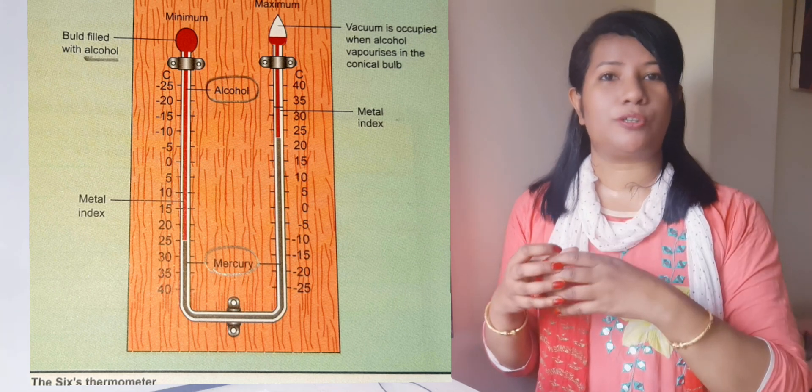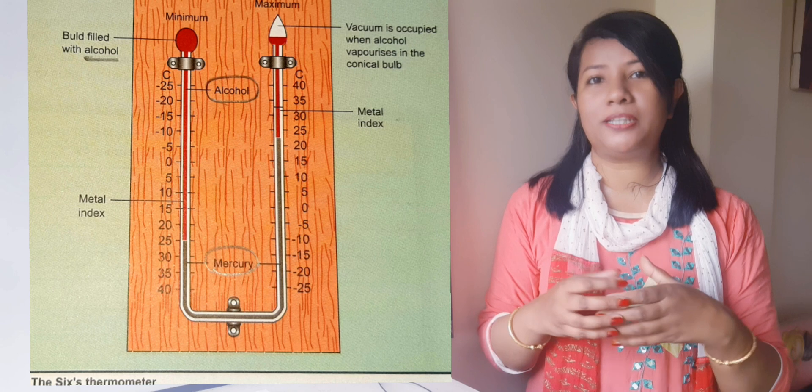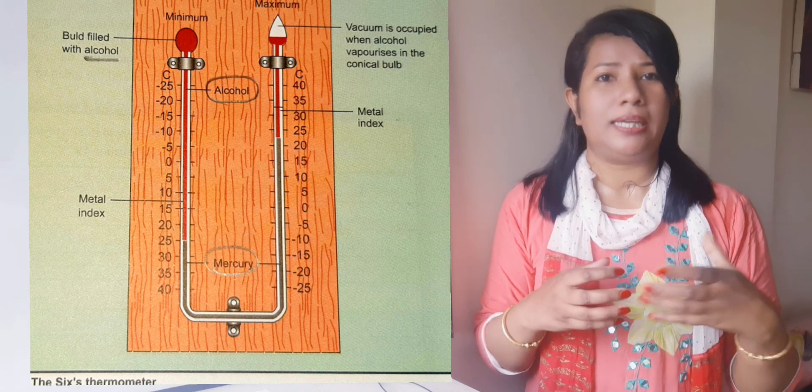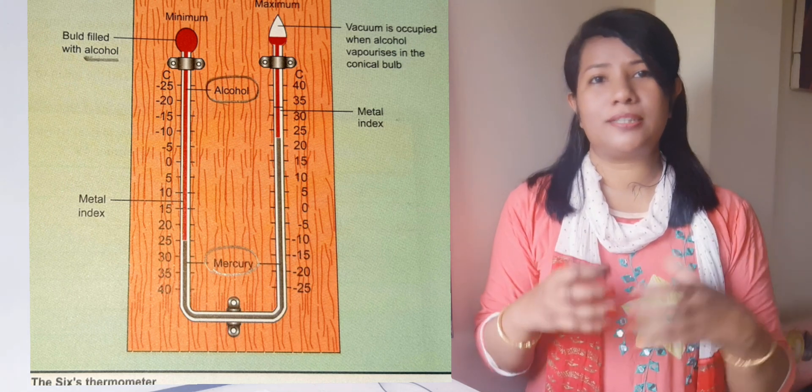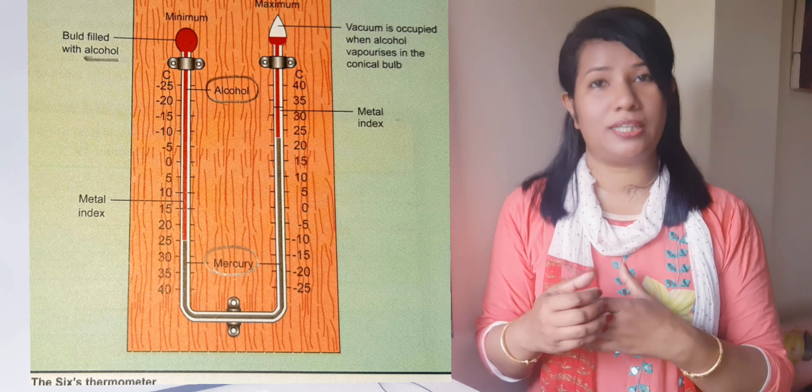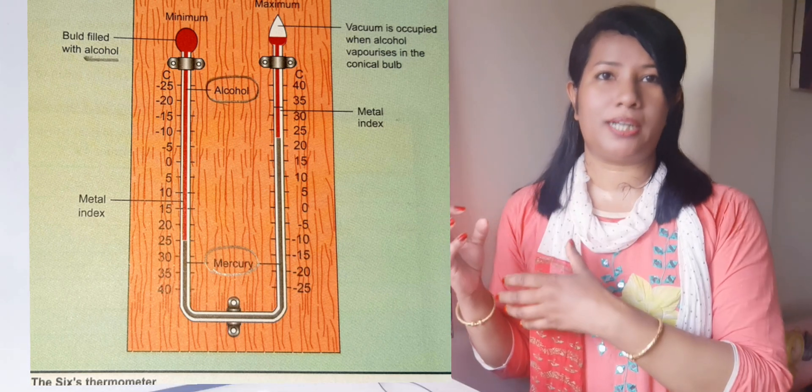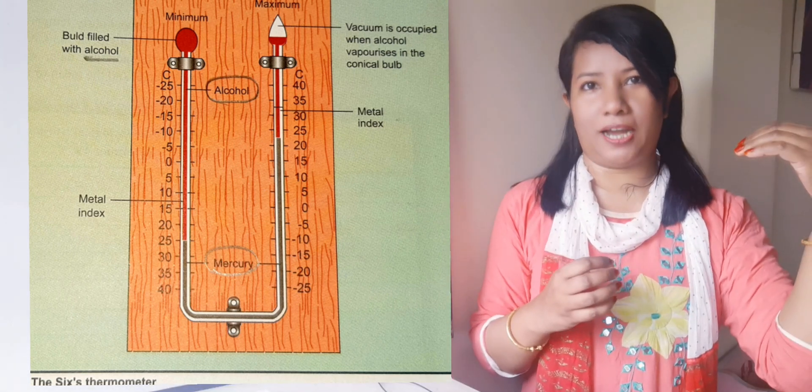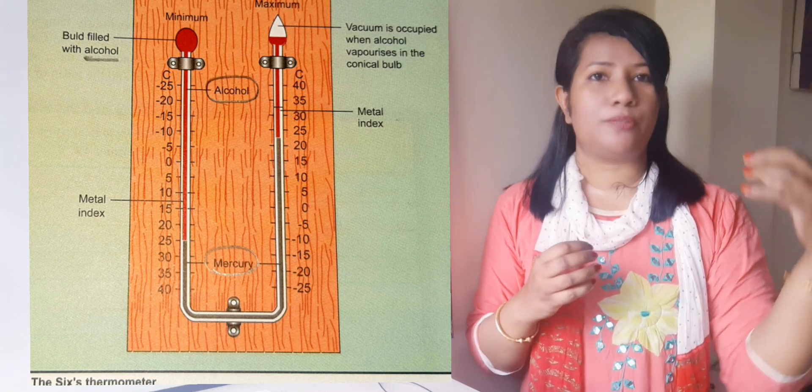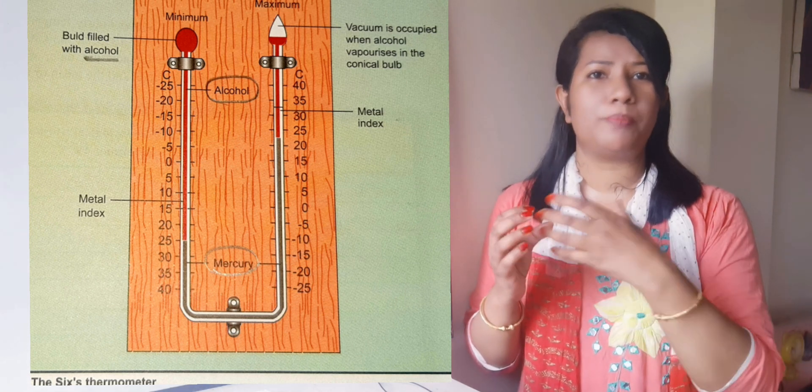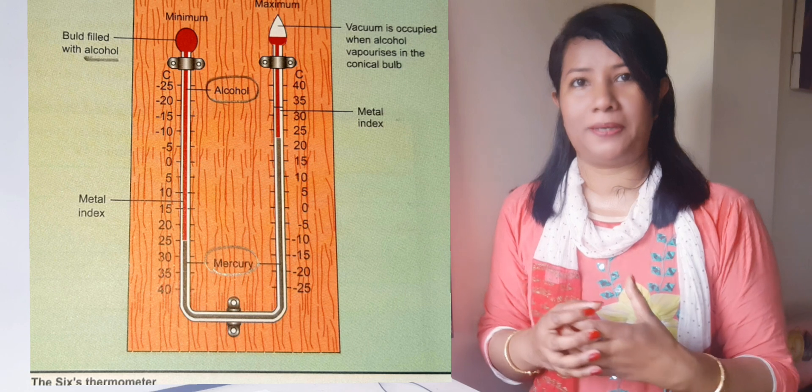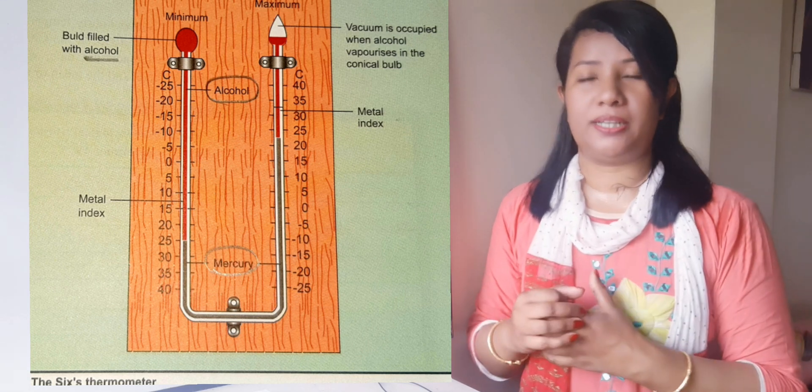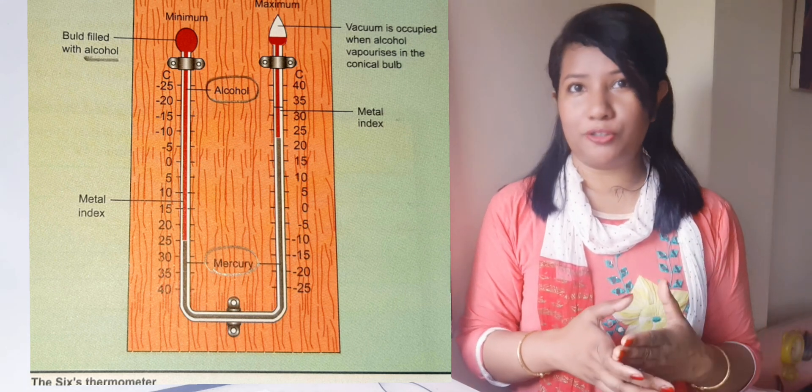While both the liquids contract when the temperature drops, the vapors in the conical valve condenses to the liquid, which is alcohol. Mercury goes down the right arm and up the left arm. The lowest temperature is recorded. Now I'm going to talk about another instrument that is really important, that is barometer.